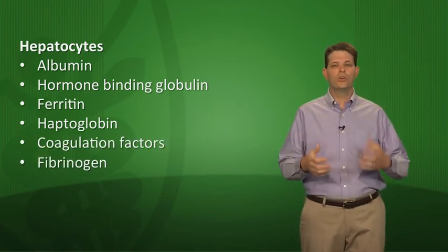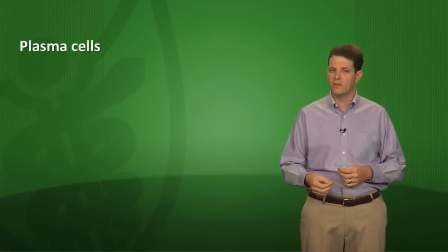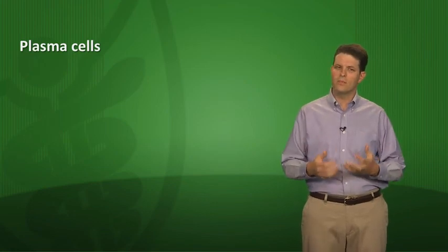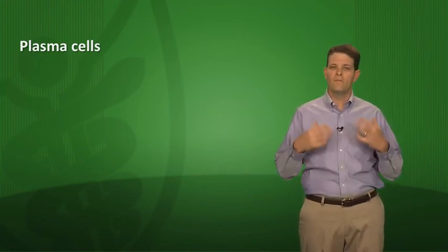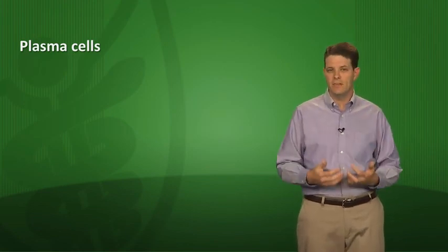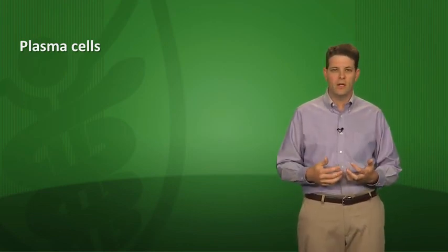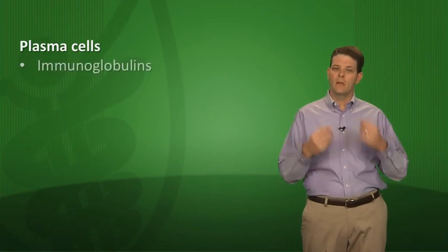Plasma cells are another important cell type. They are fully matured, fully differentiated B lymphocytes that have become antibody factories, making immunoglobulins. Now you're ready for the end-of-session quiz — pause the video and answer the quiz questions in your study guide, then we'll go over them together.